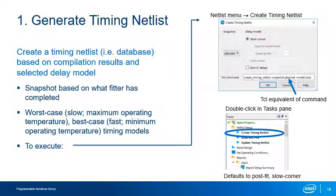To start, you'll generate a Timing Netlist based on your design's compilation results. The options available are slightly different depending on whether you are using the Lite, Standard, or Pro Edition of the Intel Quartus Prime software. For the Lite and Standard editions, the netlist can be based on a full placement and routing called a Post-Fit Netlist, or from just a synthesis called a Post-Map Netlist. Use the Post-Map Netlist for early constraint creation without routing, and the Post-Fit Netlist to verify that the fitter met all timing requirements. There are three ways to execute this command: the create_timing_netlist TCL command in the console, selecting it from the Netlist menu, or double-clicking it in the task pane.